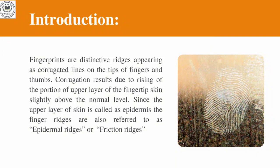Let's see how fingerprints are formed. Fingerprints are distinctive patterns appearing as corrugated lines on the tips of fingers and thumbs. Corrugation results due to the rising of the upper layer of the skin slightly above the normal level. Since the upper layer of the skin is called the epidermis, the finger ridges are also referred to as epidermal ridges, or friction ridges.